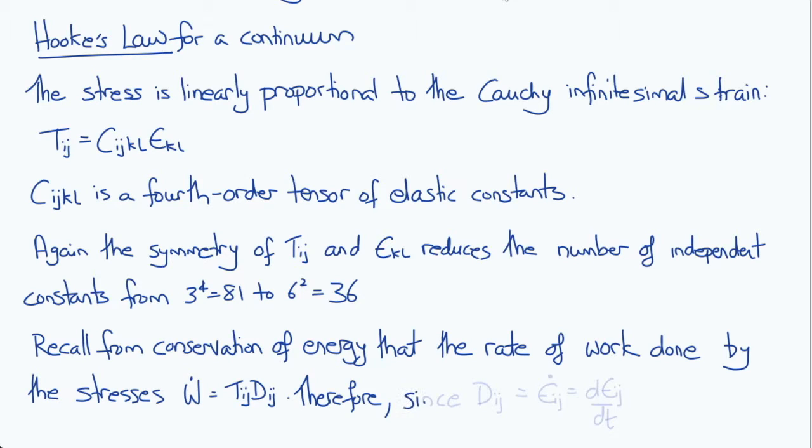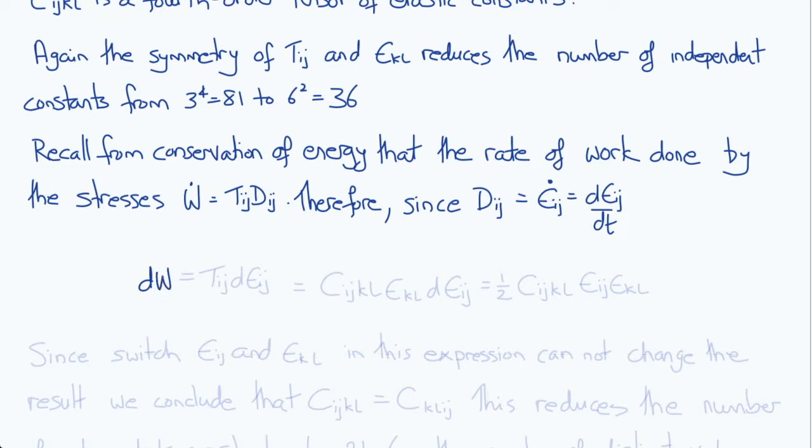Now recall that the rate of deformation tensor Dij is also the strain rate, or εij dot, or dEpsilon ij dT. So from this we can write dW dT equals Tij dEpsilon ij, or dW equals Tij dEpsilon ij.